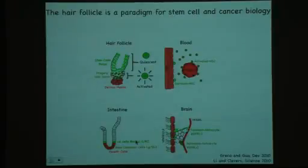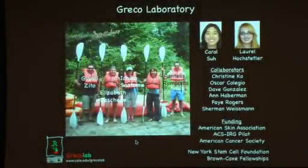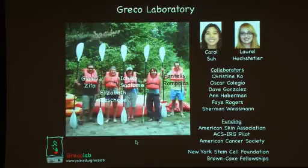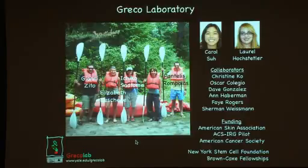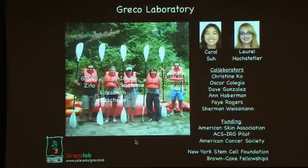To conclude, what I've told you is not specific to the hair follicle — rather, the hair follicle is a paradigm for different tissues, because all the features I've described about the stem cell niche are actually conserved in many other tissues. I'd like to introduce the very talented group of people performing all this work: Jenny set up the tumor modeling collaboration with Christine Koh; Elizabeth is a student interested in signaling; Ichiko is the lab manager who set up all the Cre lineage systems; Padelis is the postdoc who set up the two-photon in vivo imaging; Carol is doing an exciting project on rotation; and Laurel is another rotation student involved with the stem cell markers. Collaborators include Christine Koh, Oscar Colegio, and Dave and Ann Aberman for two-photon imaging. Thank you.